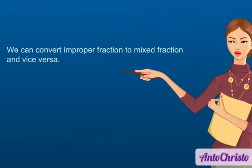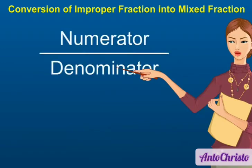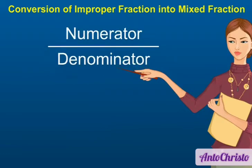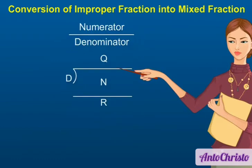We can convert improper fraction to mixed fraction and vice versa. Let us first learn the conversion of improper fraction to mixed fraction. Step 1: Identify the numerator and the denominator of the improper fraction. Step 2: Divide the numerator by the denominator, where the denominator becomes the divisor; note the quotient and remainder. Step 3: The quotient becomes the whole part, the remainder becomes the numerator of the proper fraction, and the divisor becomes the denominator of the proper fraction.